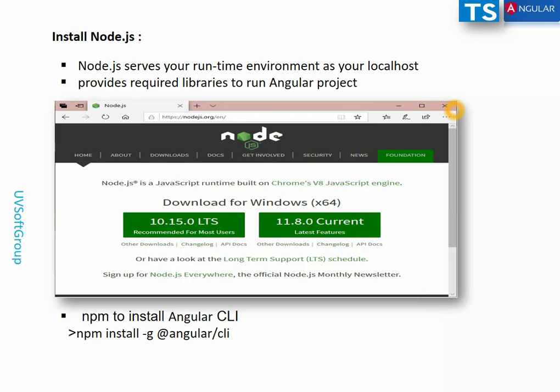Node.js is a runtime environment and needs to be installed on your local machine. When you deploy the application to thousands of client machines, each machine needs Node.js installed. That's why I mentioned in the last screencast that as a full-stack developer you need to plan for this.